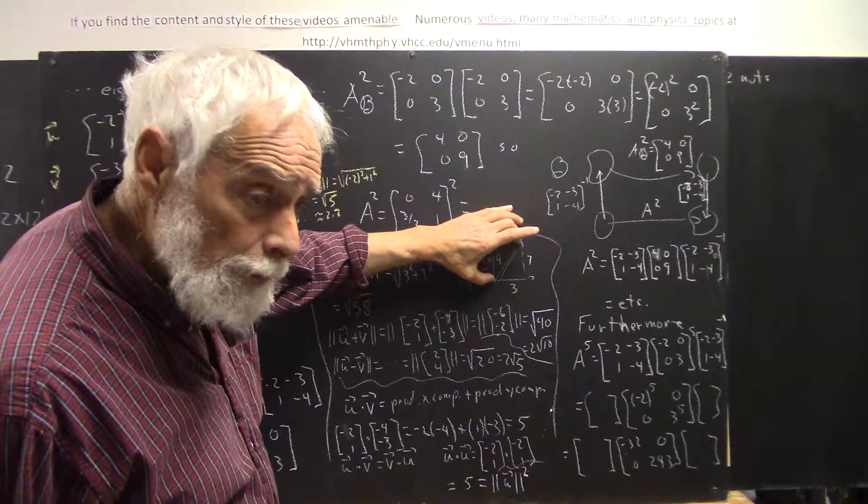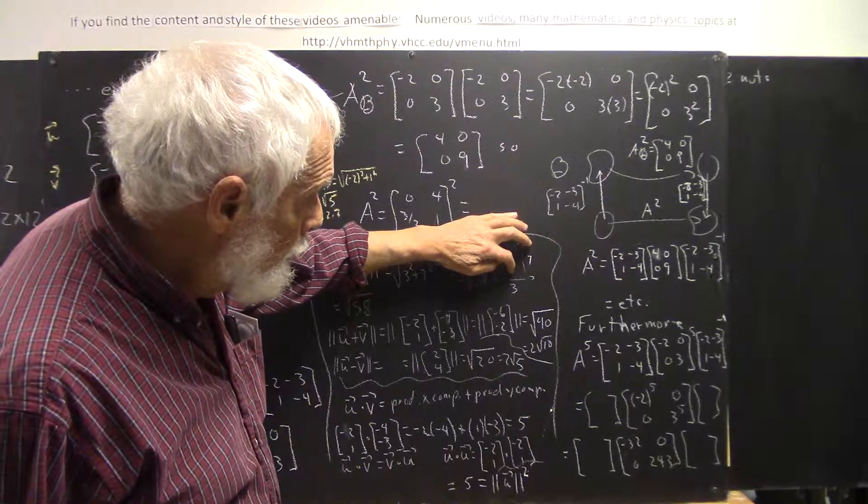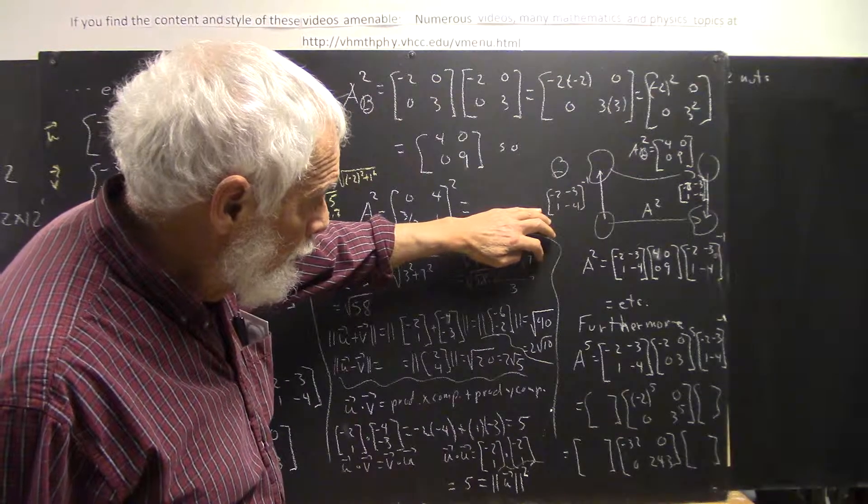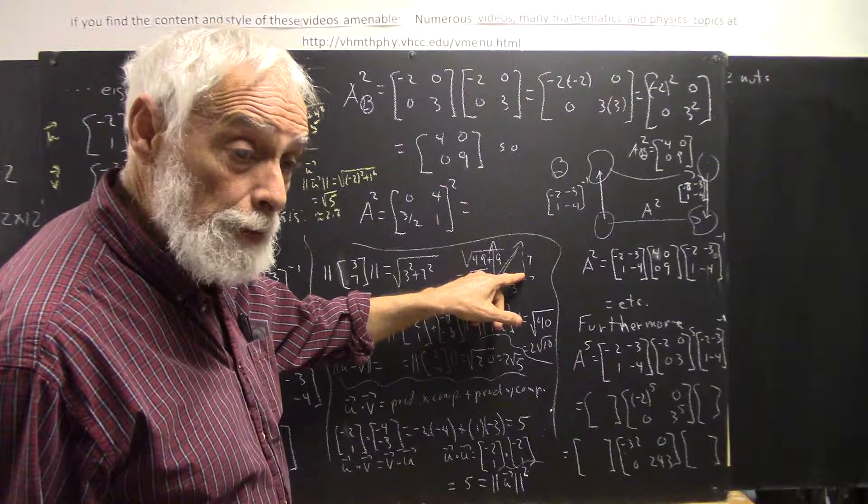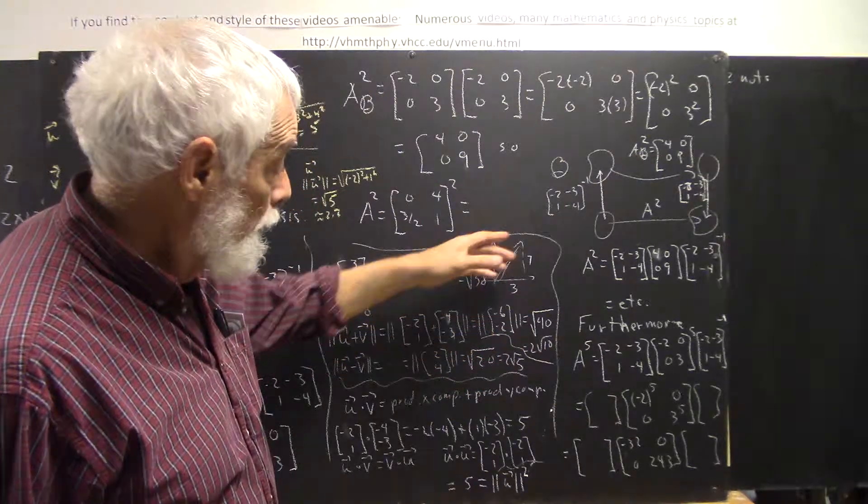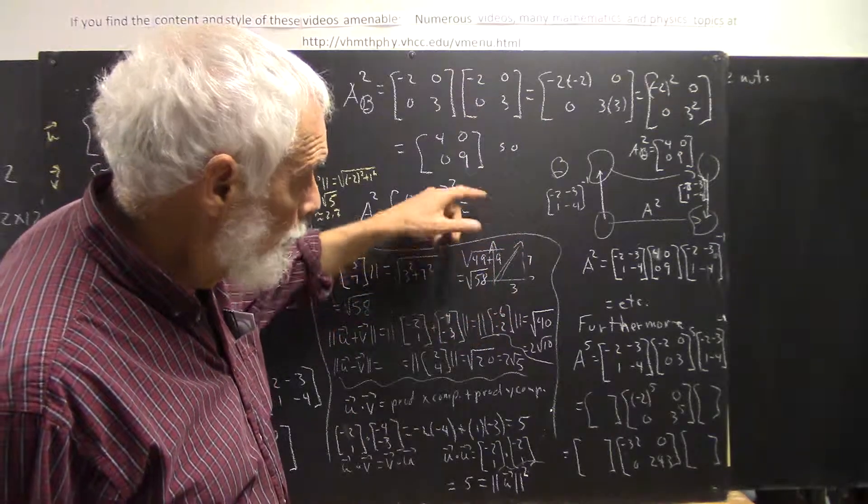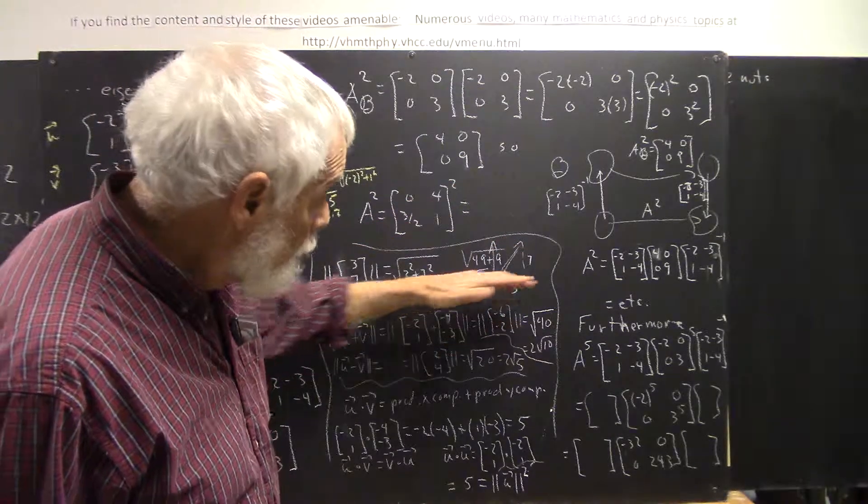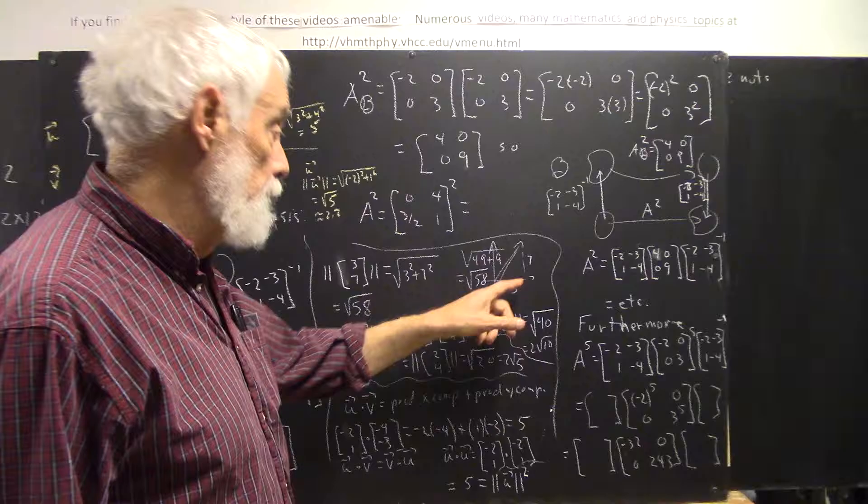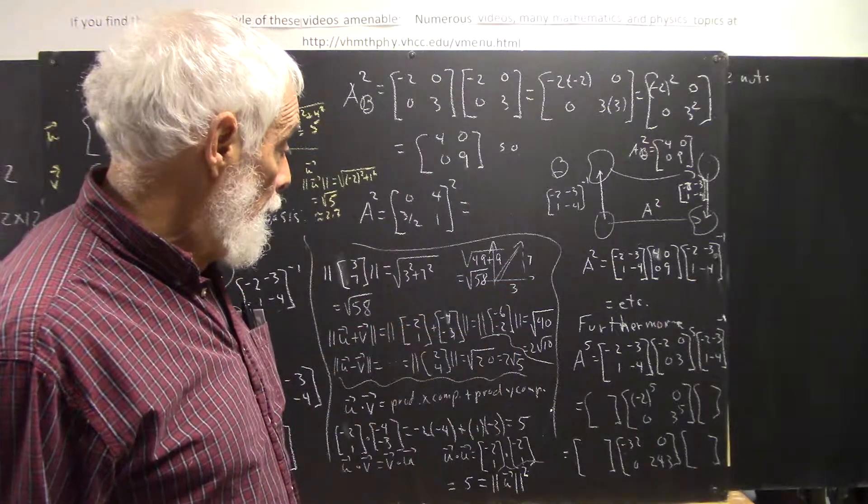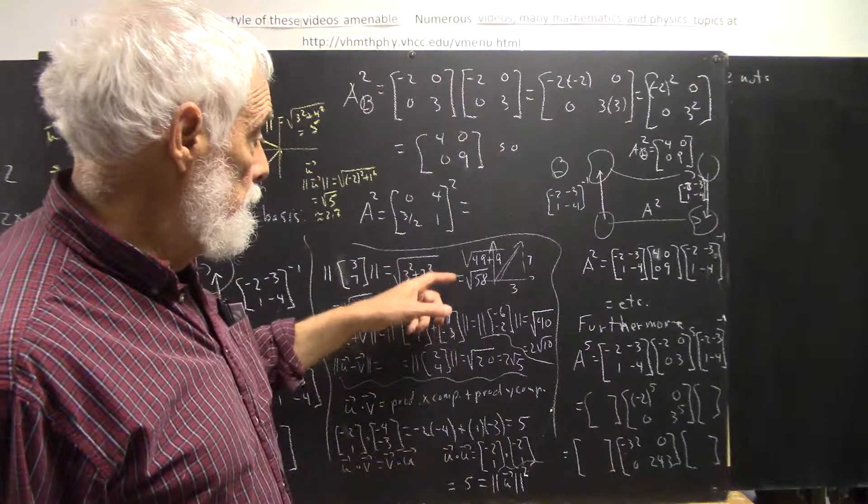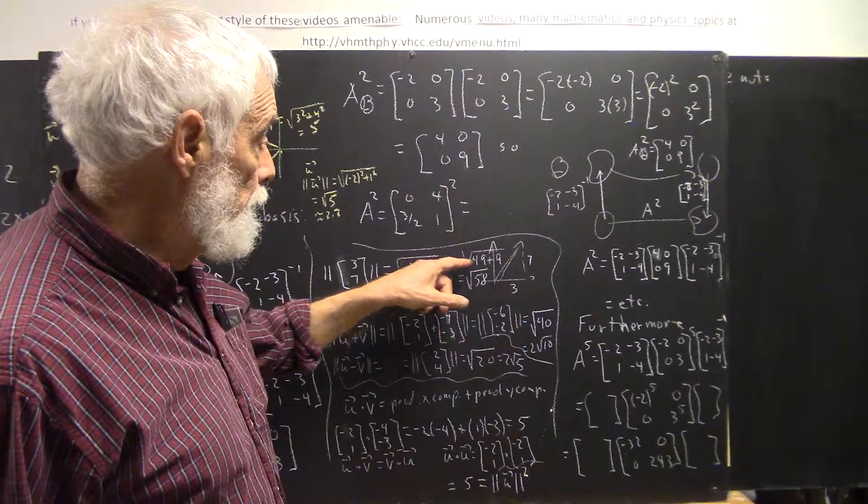These projection lines here have to go parallel to the y-axis, so they have to be perpendicular to the x-axis. That makes this a right angle. So the magnitude of the vector: square root of 49 plus 9, 7 squared plus 3 squared.